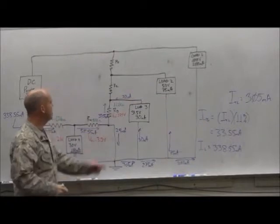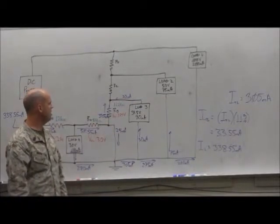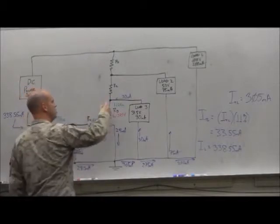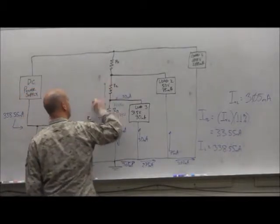Well, that 30 milliamps from load 3 and 33.55 milliamps across R3 marry up with that node and go across R2, do they not? And how much is that?